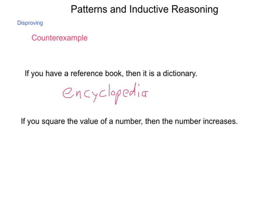So if you square the value of a number, then the number increases. And that makes sense. If I take 2 and square it, I get 4. If I take a -7 and square it, I get a positive 49.